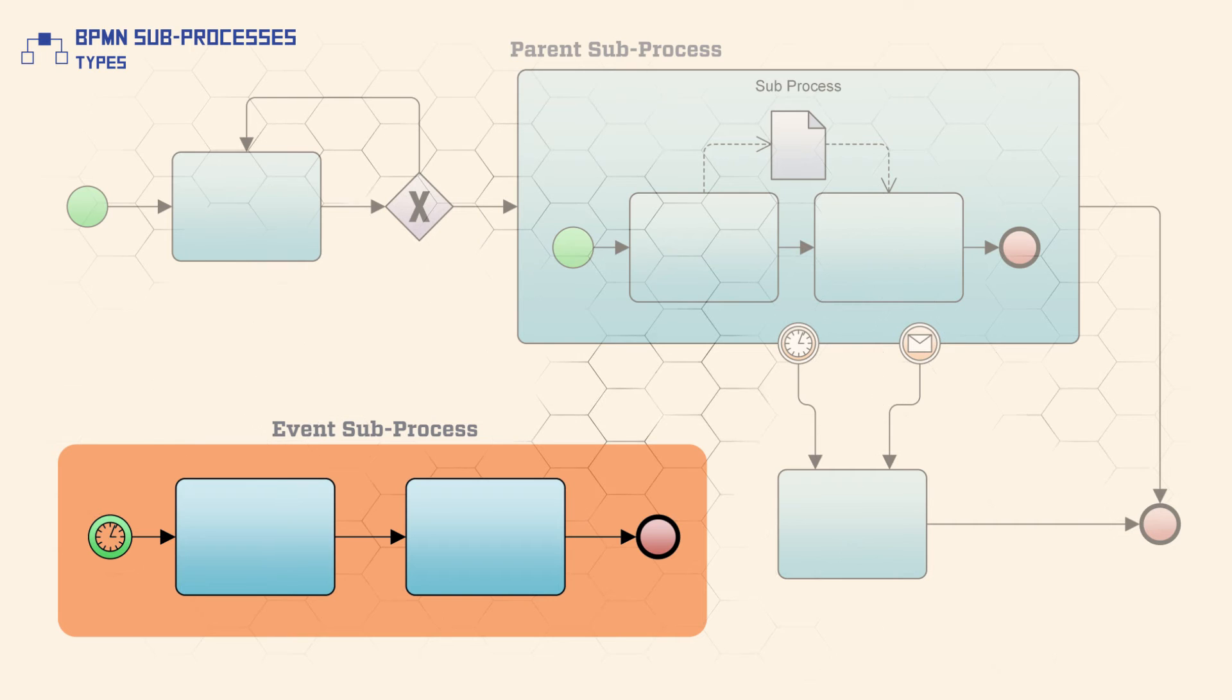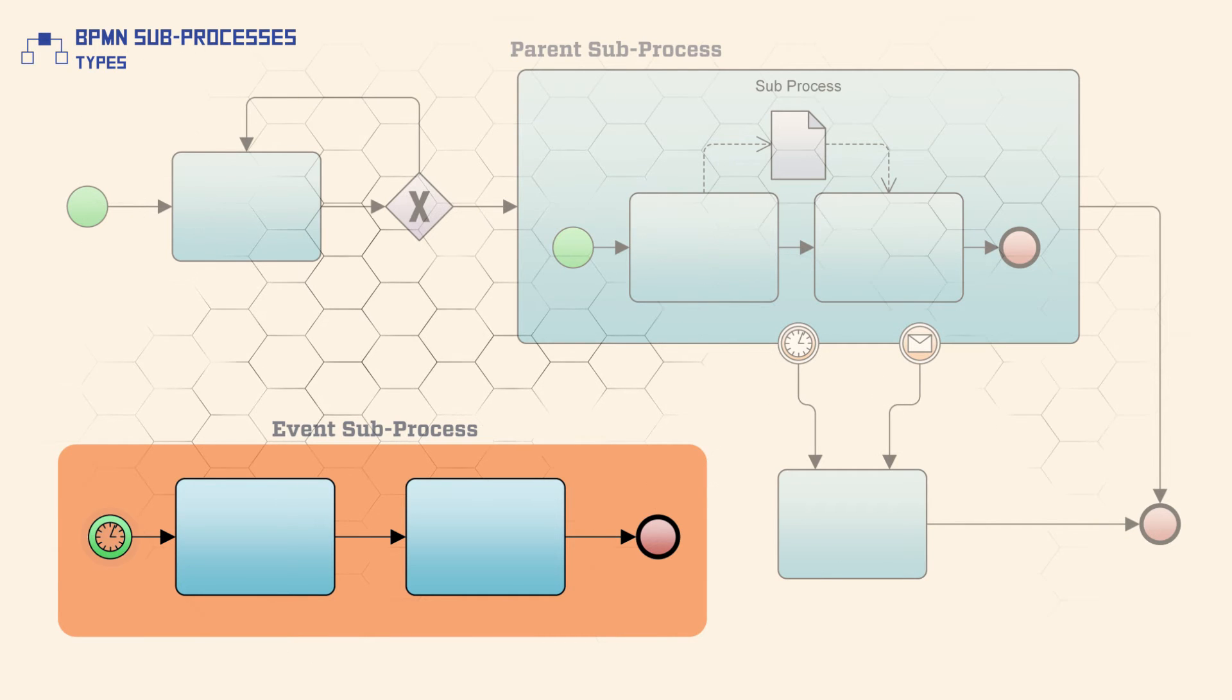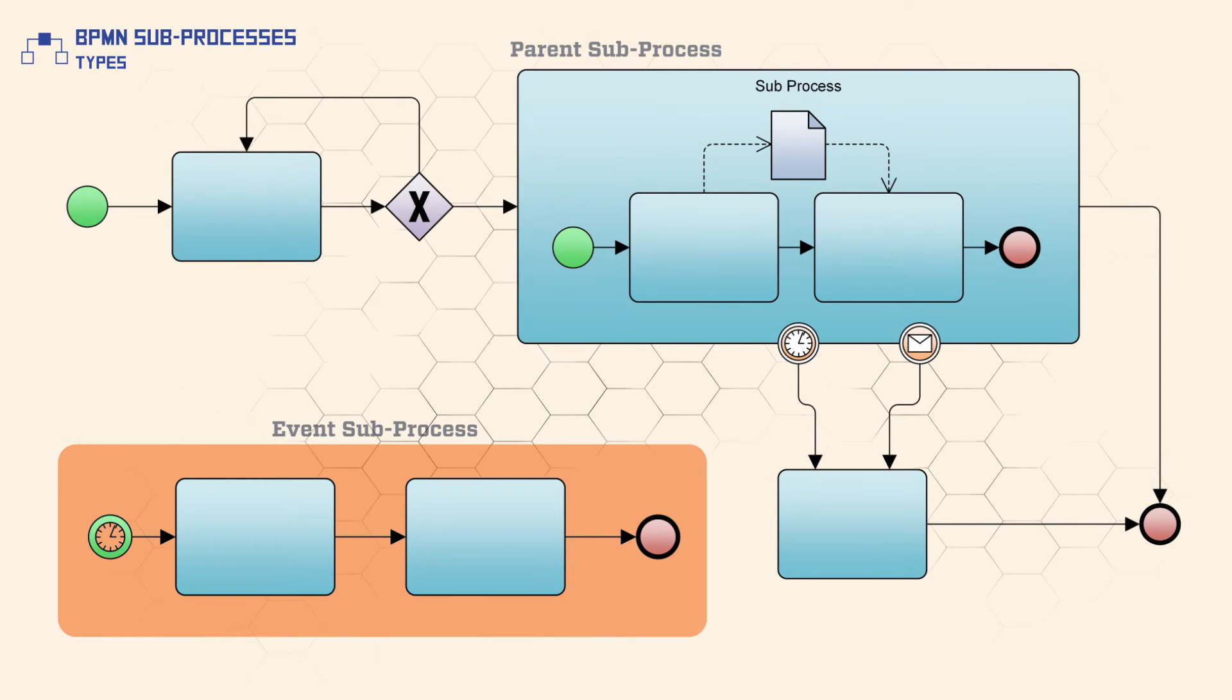An event subprocess is started by an event like a time condition or message received. There are two possible consequences to the parent process when an event subprocess is triggered. Either the parent process is interrupted, or the parent process can continue its work.